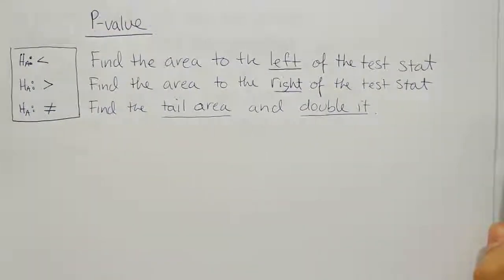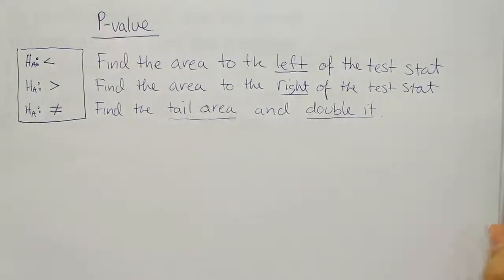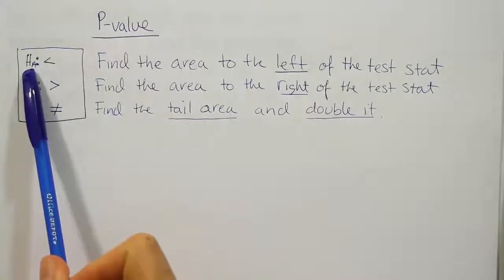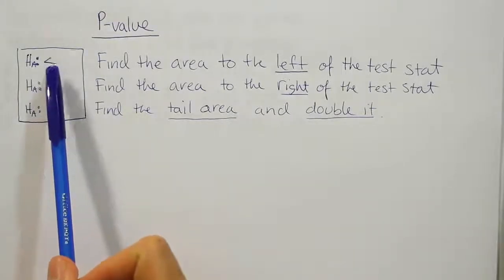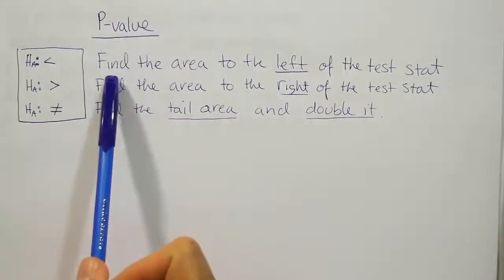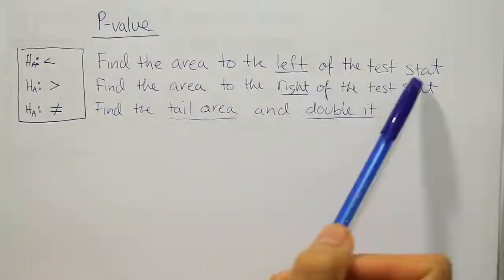So in order to find the p-value, we have to remember that there is a rule or a set of rules that we used. The rules basically adhered to this idea, which was that if HA had the less than symbol, that meant we were dealing with a left tailed test. And then the rule for the p-value was find the area to the left of the test statistic.